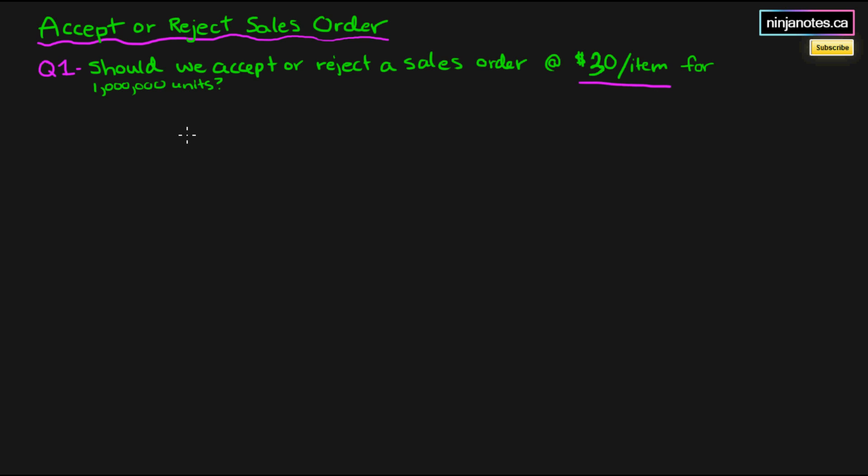So thirty dollars an item and one million units, should we do this? The answer lies within the contribution margin, and this is especially important that we use the contribution approach. So let's look at both income statements.